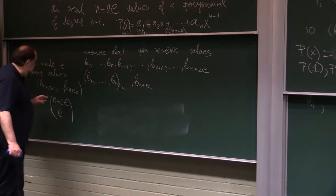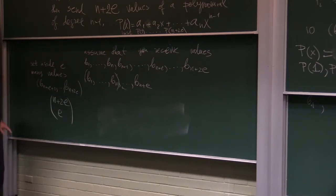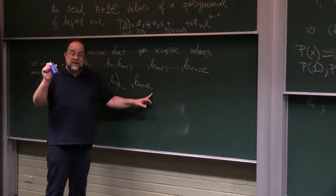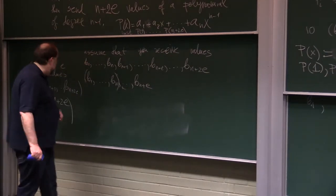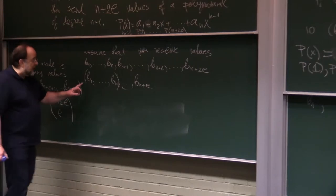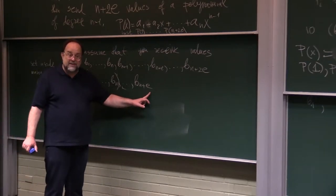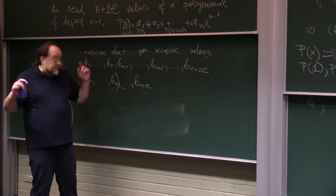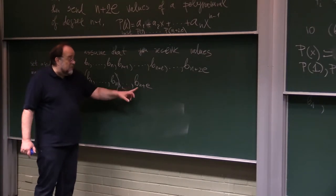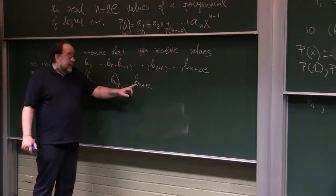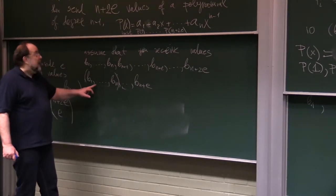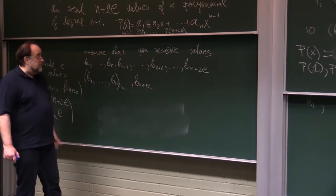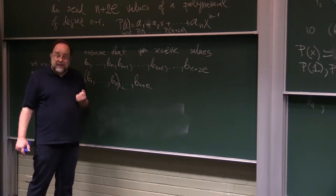So the only way, after you isolate e many values, that the remainder can fit a single polynomial of degree n minus 1, is if all the wrong values were isolated and all of these values are correct. And this polynomial must be exactly the polynomial p, but of course the wrong values will not fit.